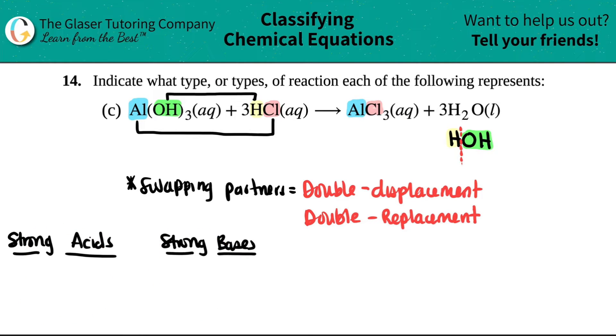So your strong acids are HCl, which is what they have here. So that's why just recognizing that this is a strong acid is going to help you answer this question. HBr, HI, HNO₃, HClO₄, and then H₂SO₄.